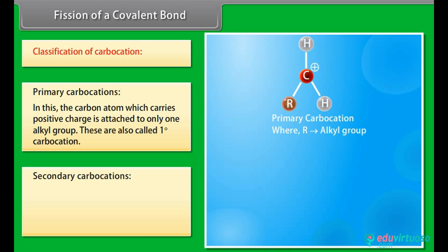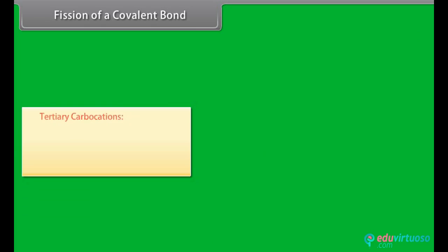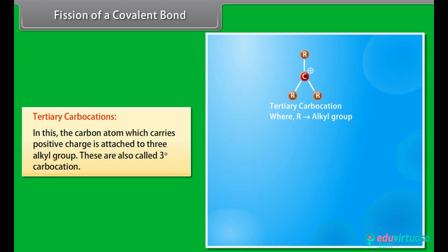Primary carbocations are also called one degree carbocations. In secondary carbocations, the carbon atom carrying the positive charge is attached to two alkyl groups — also called two degree carbocations. In tertiary carbocations, the carbon atom carrying the positive charge is attached to three alkyl groups — also called three degree carbocations.